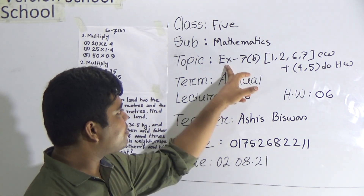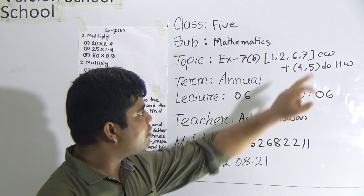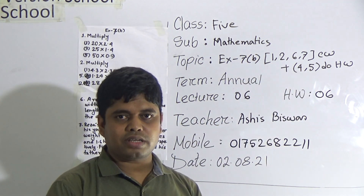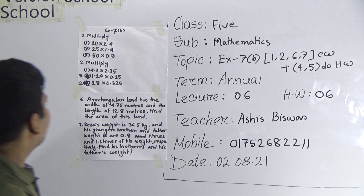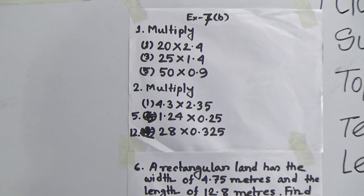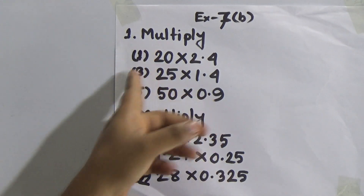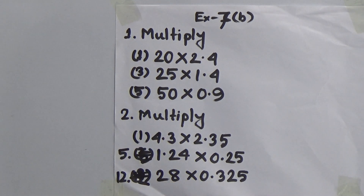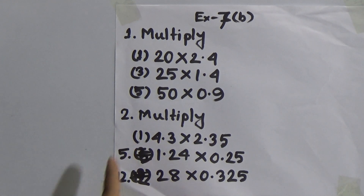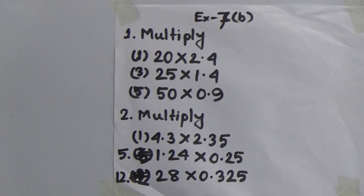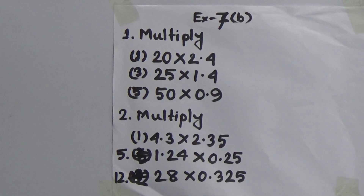I repeat, from exercise 7b, you shall solve 4 and 5 as your SW. Now, we shall go to question number 1. Number 1 has a lot of problems. From those problems, we have solved only 3 problems: 1, 3 and 5. And question number 2 also has a lot of problems. From those problems, we shall solve only 3 problems which are 1, 5 and 12. And we shall solve problem number 6 and 7. Problem number 4 and 5 will be your SW.